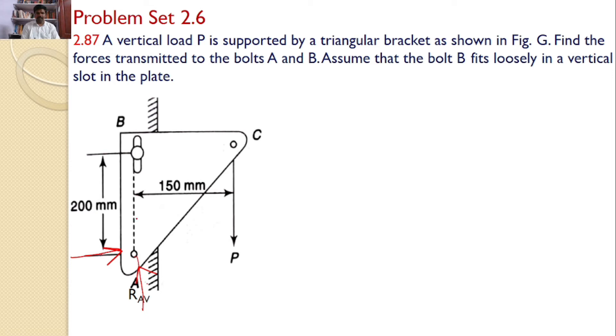But at B, it is permitted to slide in the vertical direction. So, no reaction will develop in the vertical side. Only one reaction will develop in the horizontal direction. The reason being, at B, the plate is not permitted to slide in the horizontal direction.